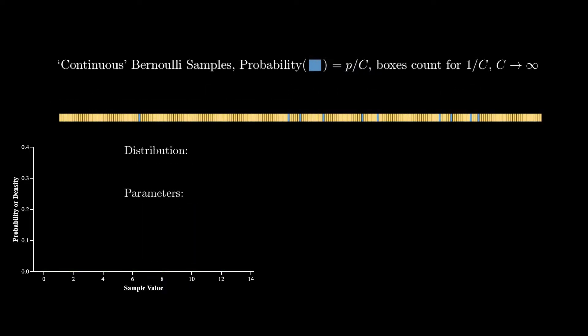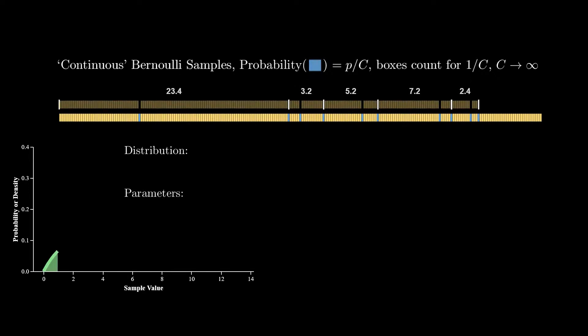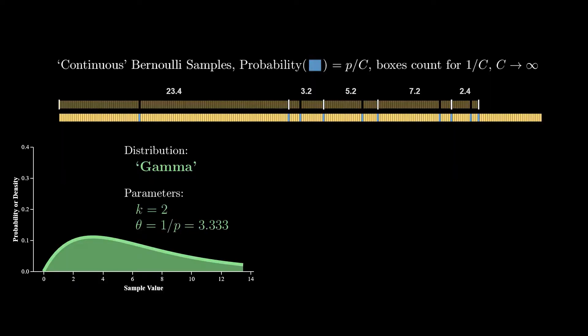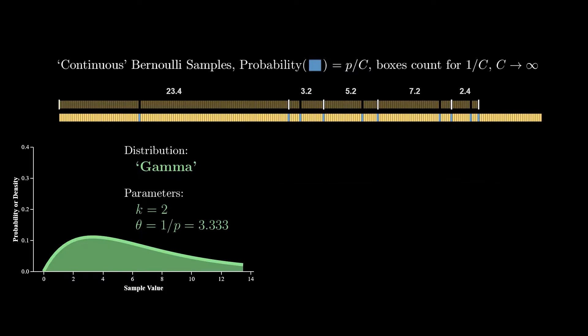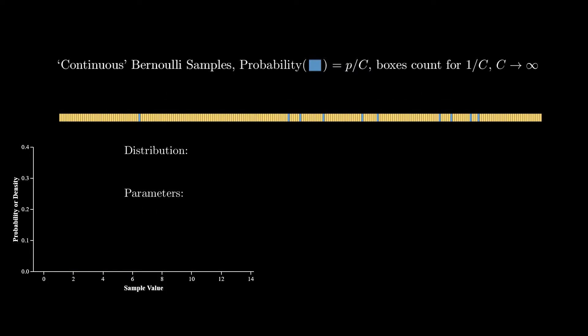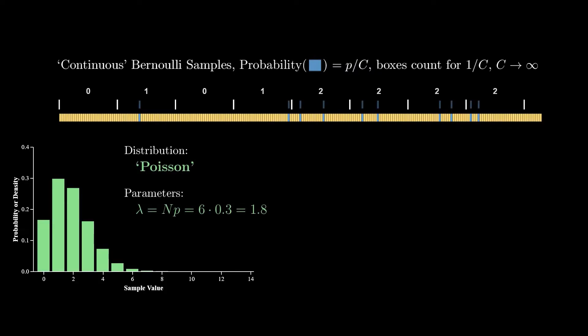Moving on, if you were to sum the boxes between every other blue box, then you would get a gamma distribution with the shape parameter equal to 2 and the scale parameter equal to 1 over p. As you can see, the gamma distribution can be viewed as a continuous version and in fact a generalization of the negative binomial. All right, last one. If you were to count the blue boxes between each block which sums to 6, then you'd have a Poisson distribution with a rate parameter equal to 6p. Who saw that coming?